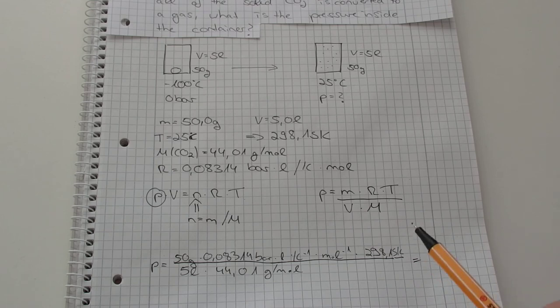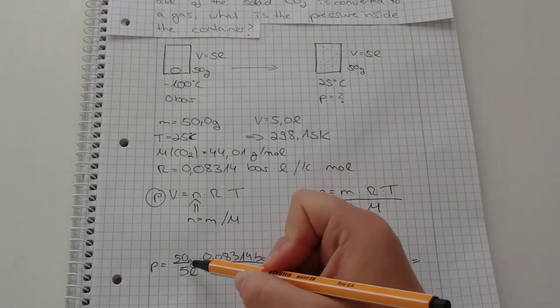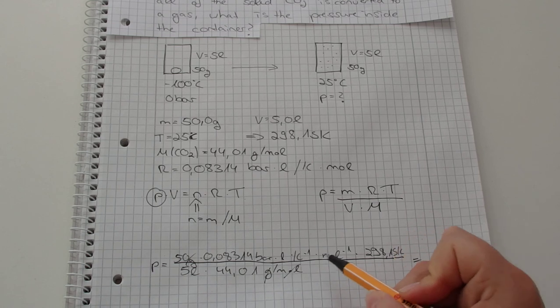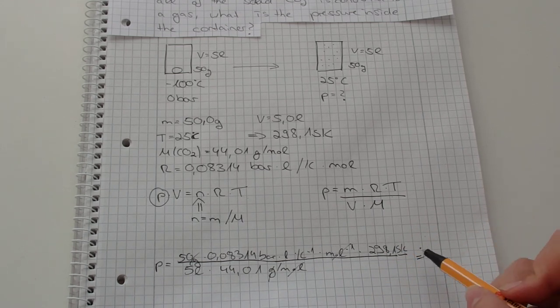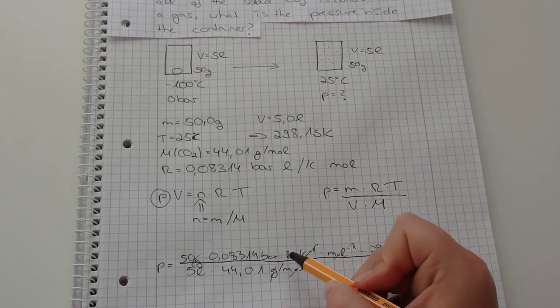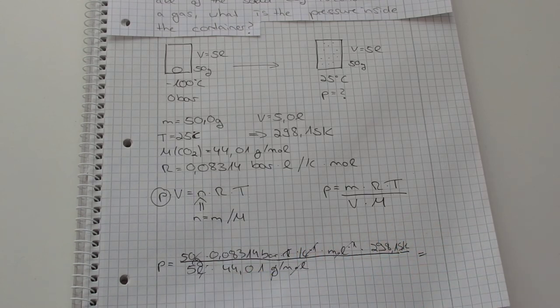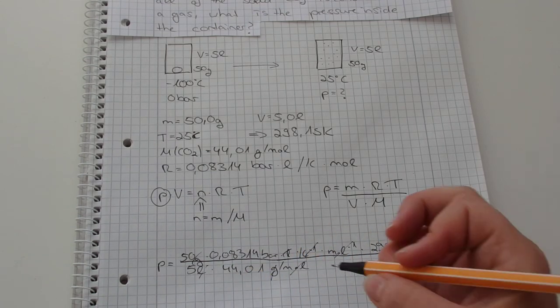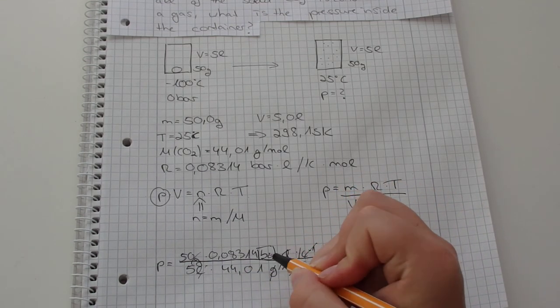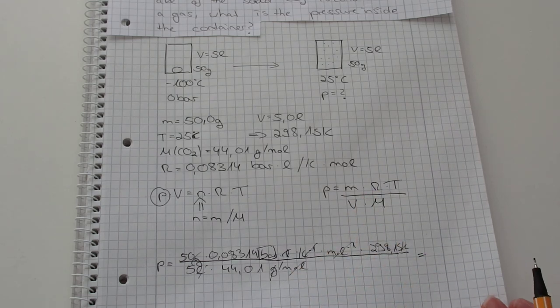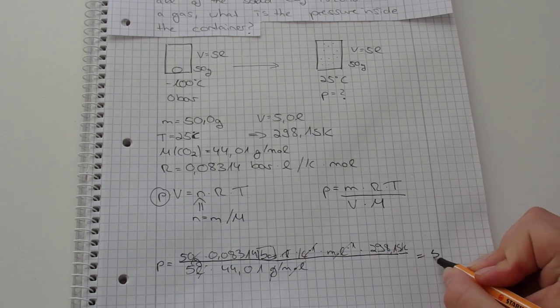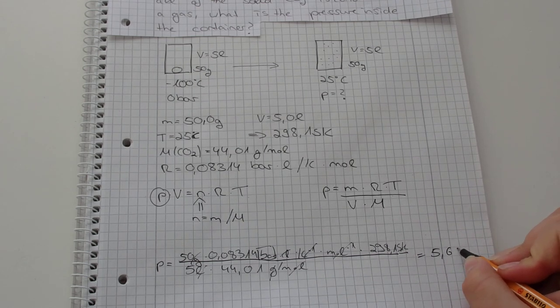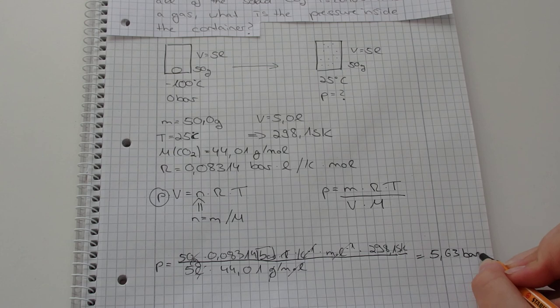So then we can see the grams cancel out. It's easier to see all of the units are correct. So we have only bar remaining. And then it's easier to type it in the calculator. And then we have 5.63 bar.